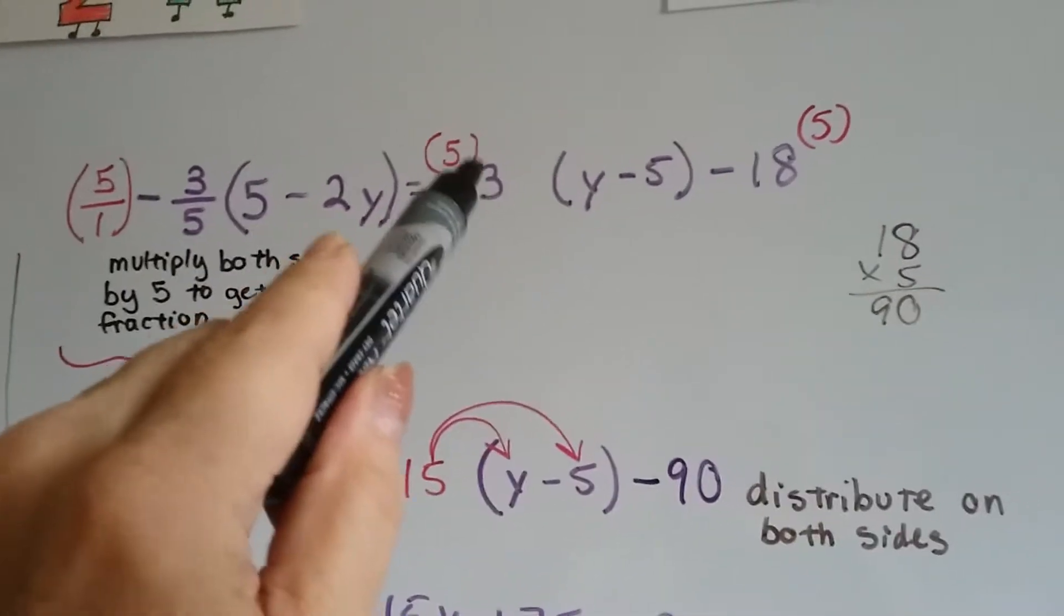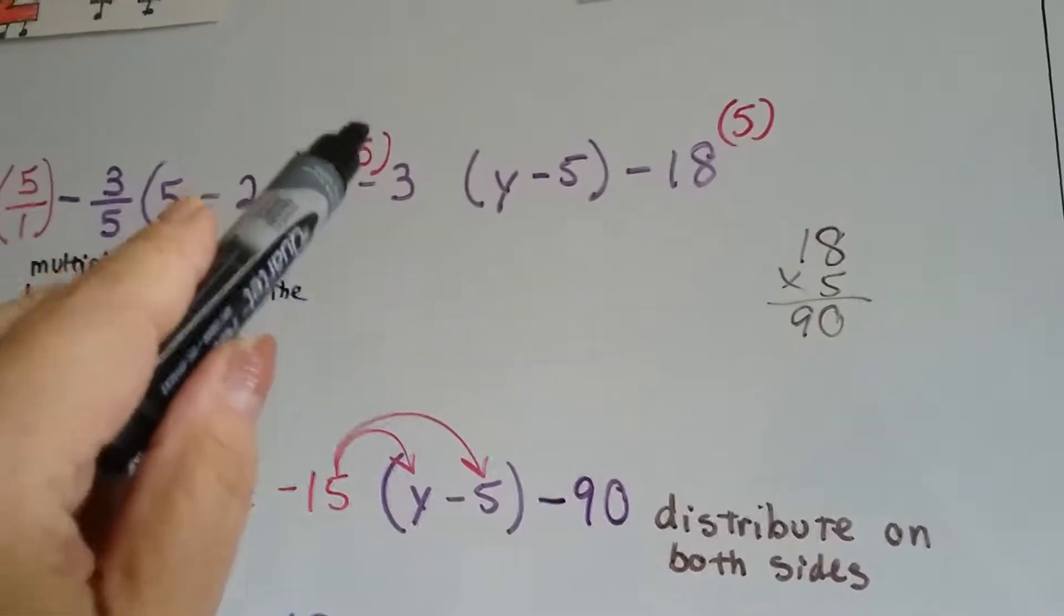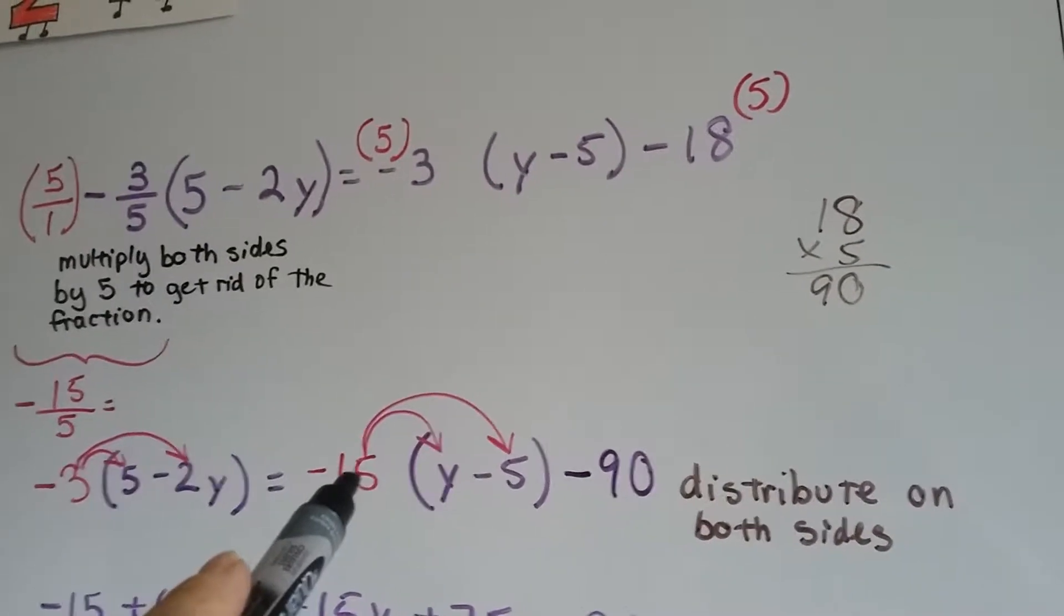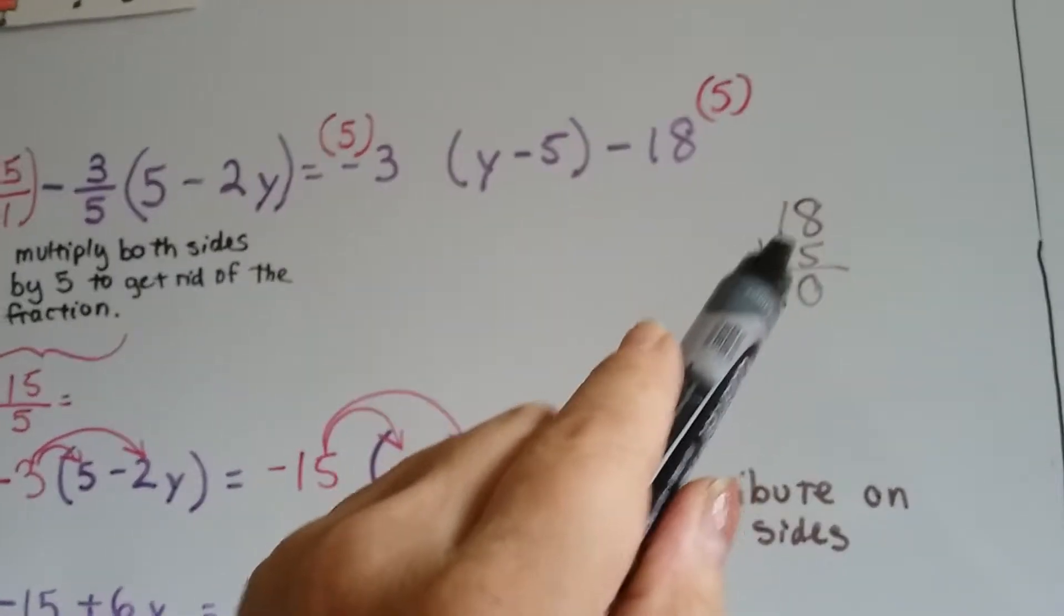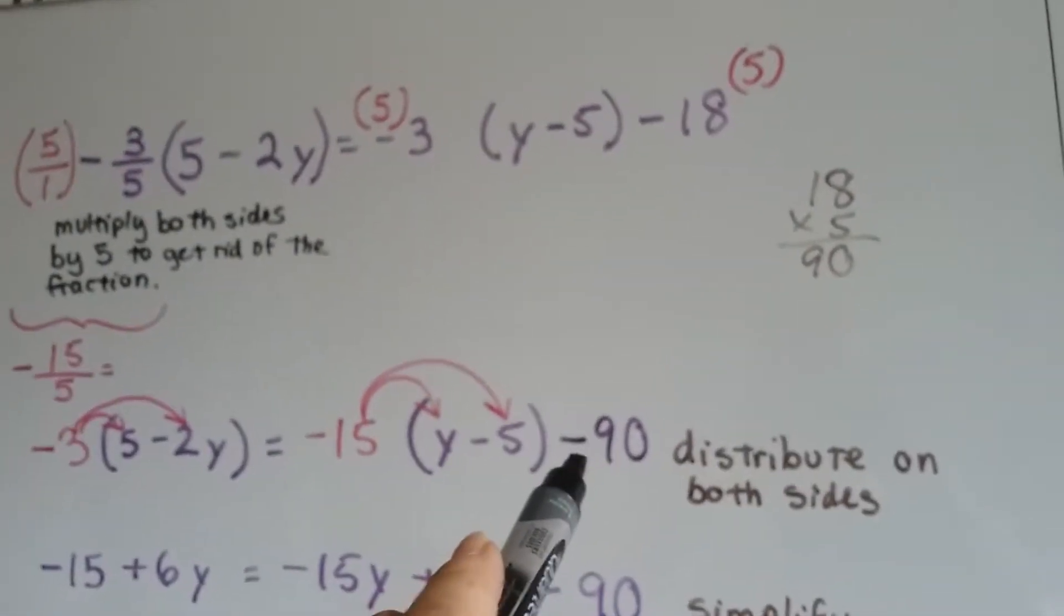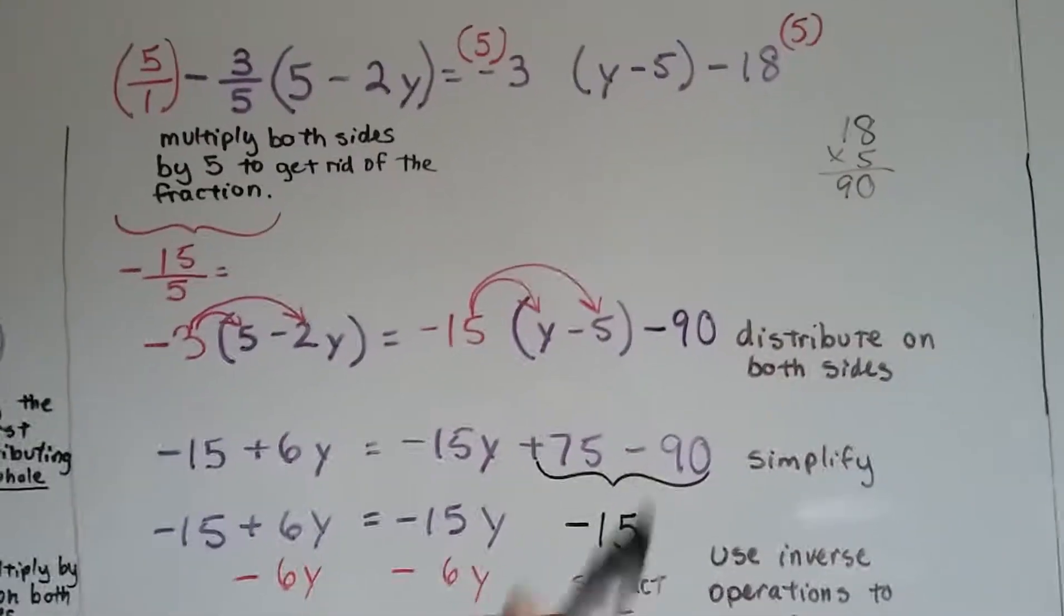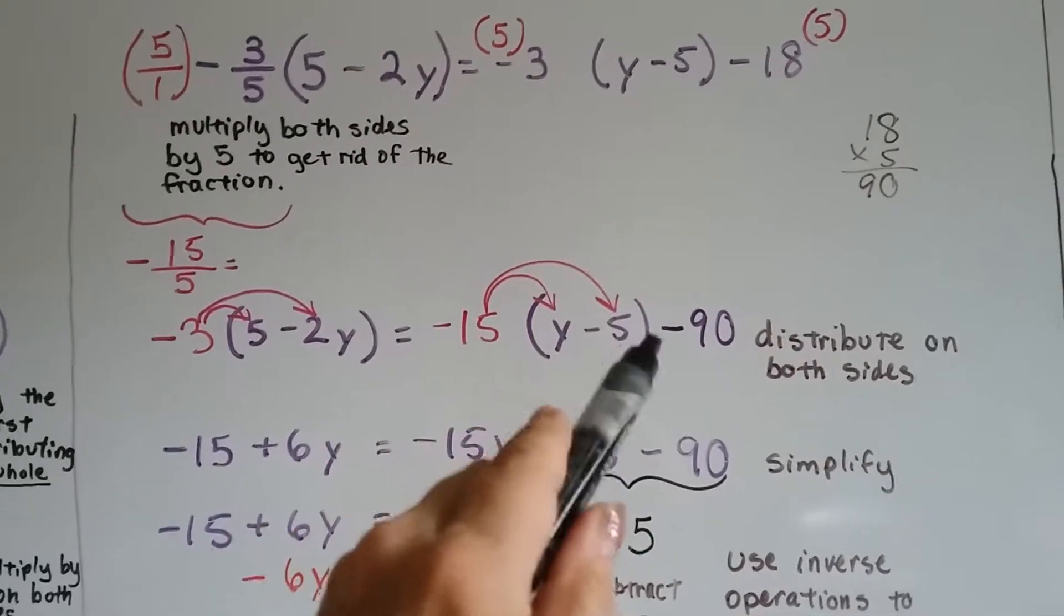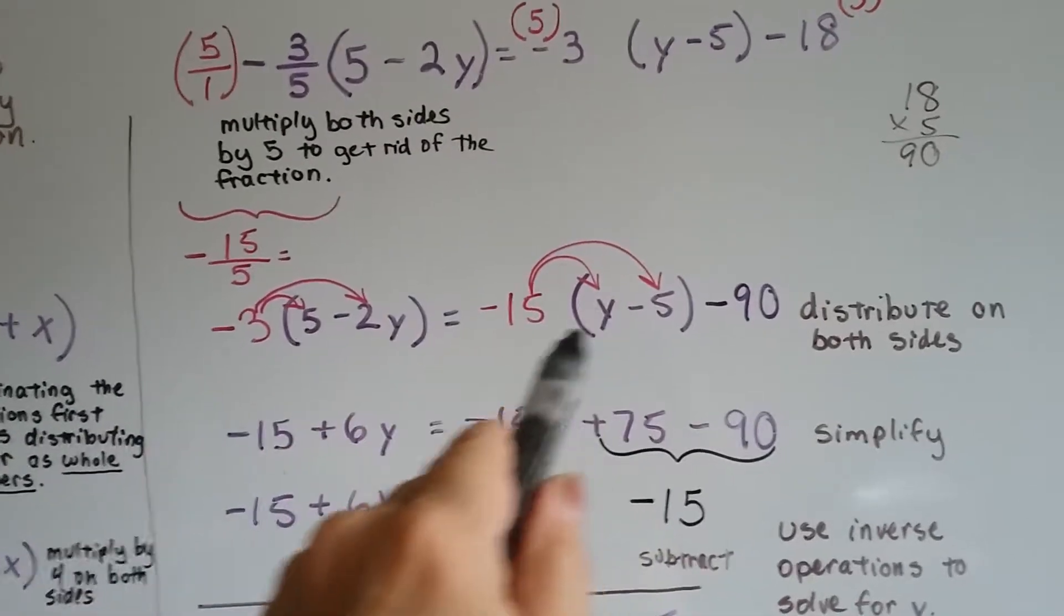Now I have to multiply this side by positive 5. 5 times a negative 3 gives us another negative 15 over here, and we have to multiply this negative 18 by 5. 18 times 5 is 90, so we have a negative 90. Now we can distribute on both sides of the equation. This guy is just going to come along for the ride. He doesn't get distributed because he's not in the parentheses.